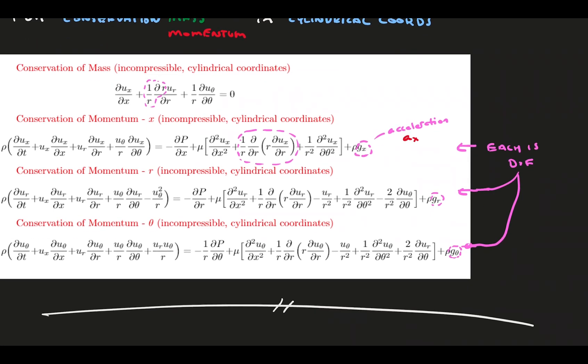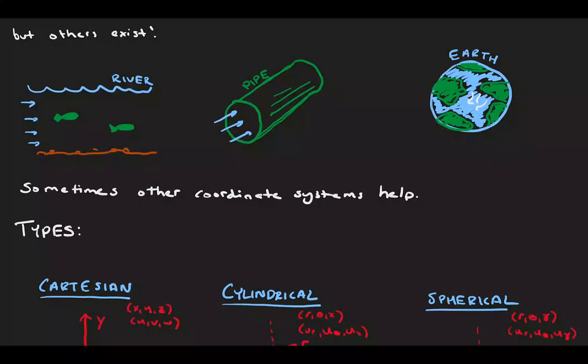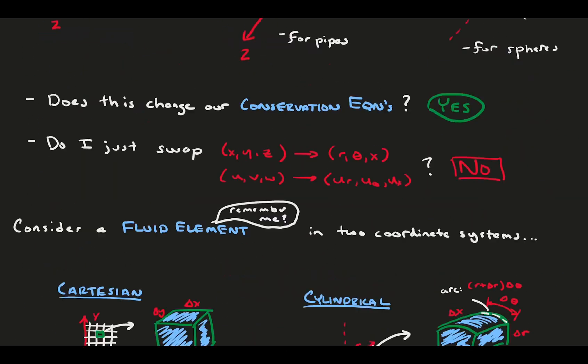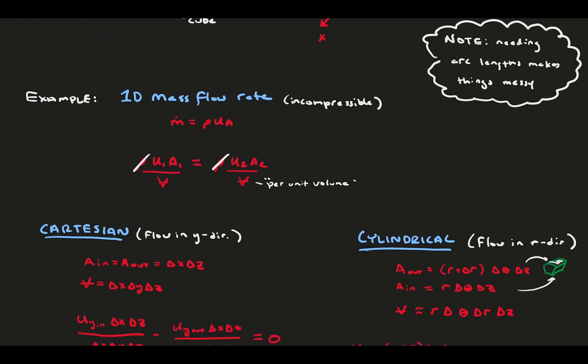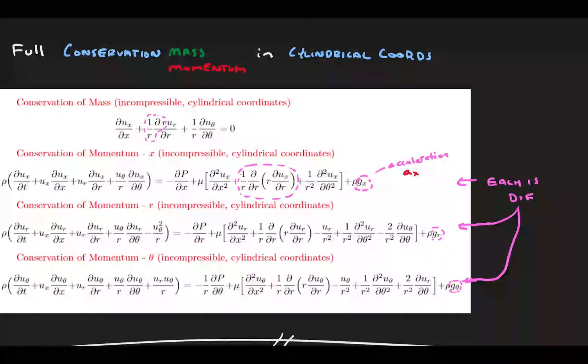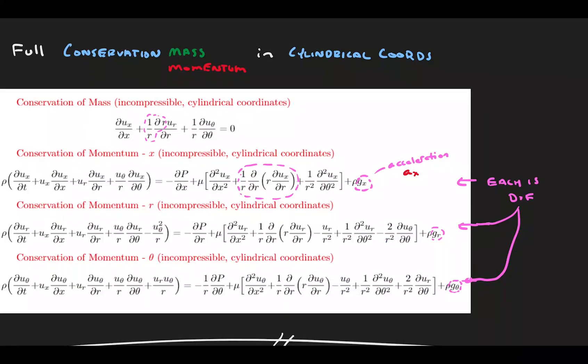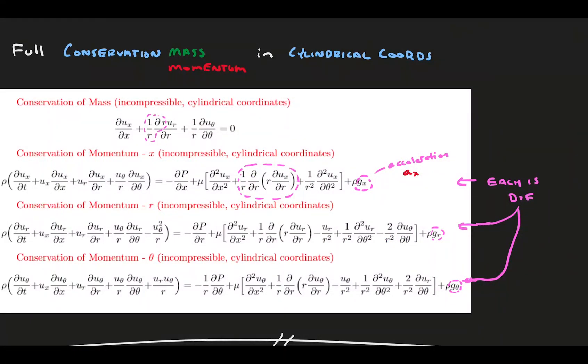And that's it. Let's quickly review. We started by realizing there are three primary coordinate systems: Cartesian, cylindrical, and spherical, and that each have different applications. Each coordinate system has slightly different equation forms as we saw with a simple 1D mass flow rate conservation exercise. And now we have a different set of equations in our tool belt, the incompressible cylindrical conservation equations. I hope you enjoyed the video and thanks for watching.